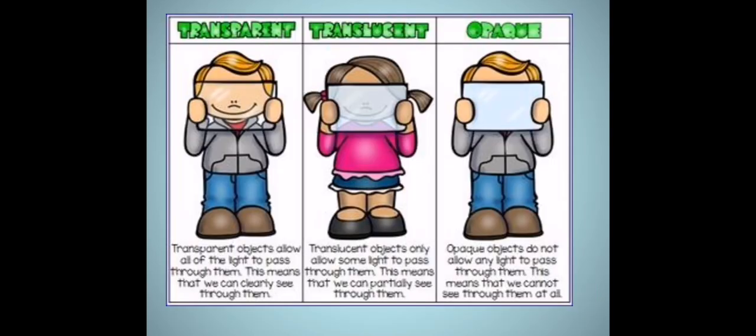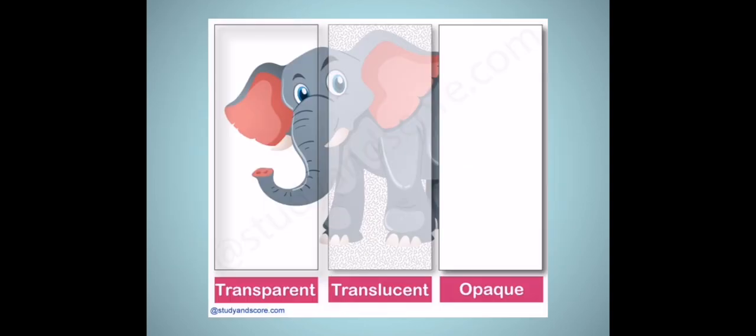You can get a clear idea about transparent, translucent, and opaque objects from this image. Looking at this picture, from the first glass we can see the front part of the elephant clearly because that part is transparent. From the second part we see an unclear image of the elephant because it is translucent. From the third part we cannot see the elephant at all because it is opaque.